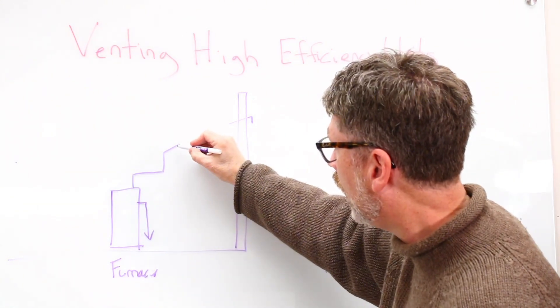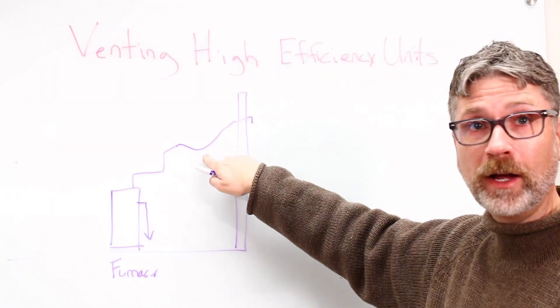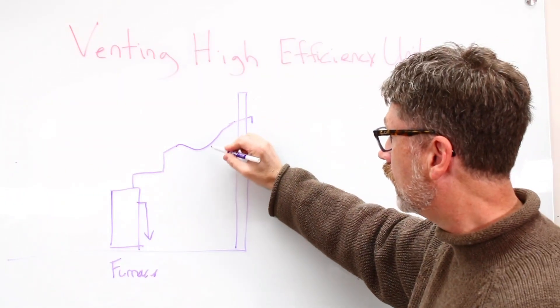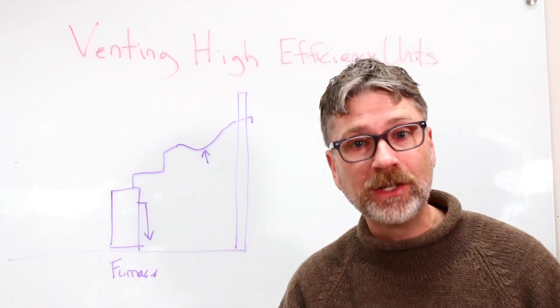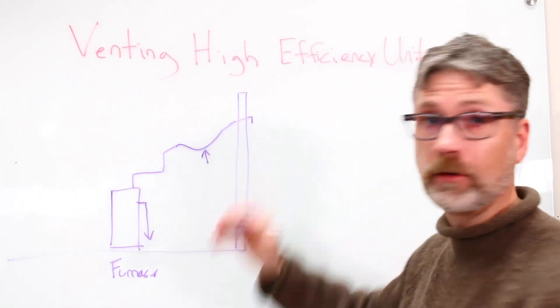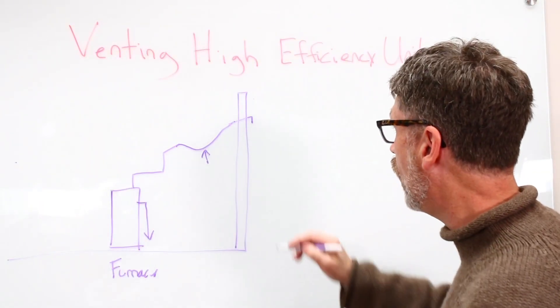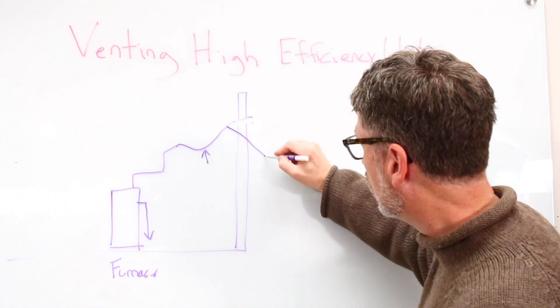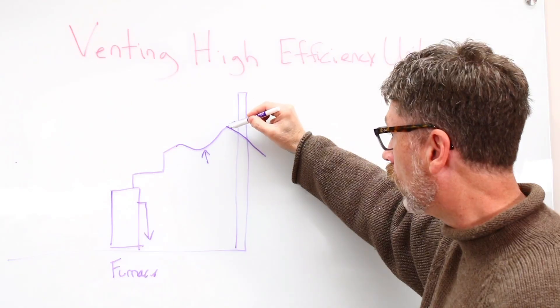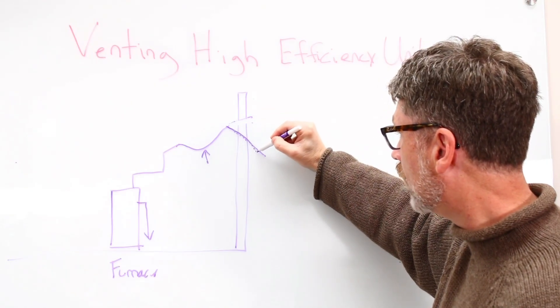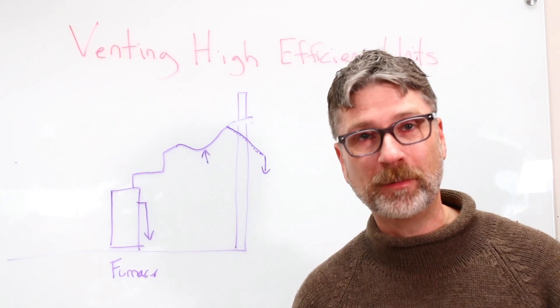If, on the other hand, something happened, it was installed wrong, and you have a sag in your pipe, guess where the water is going to end up? It will pool right here and the unit will sense a blockage in the pipe because it can't push air through the water puddle and it will turn it off. In the same way, you also don't want your pipe to go like this outside because water will form here and dribble down the outside of that and then end up freezing on the outside of your pipe. That will also block your pipe.